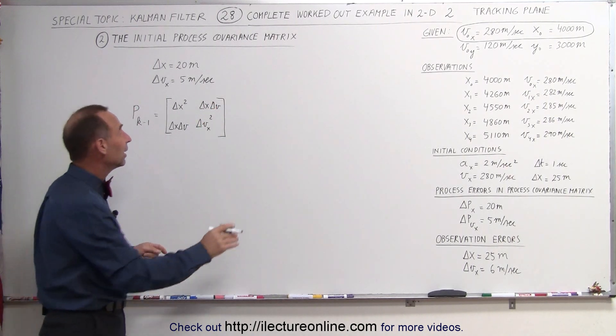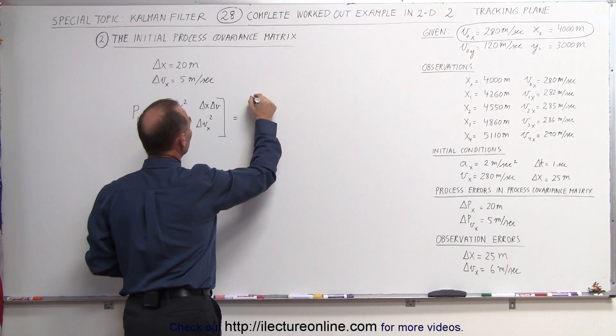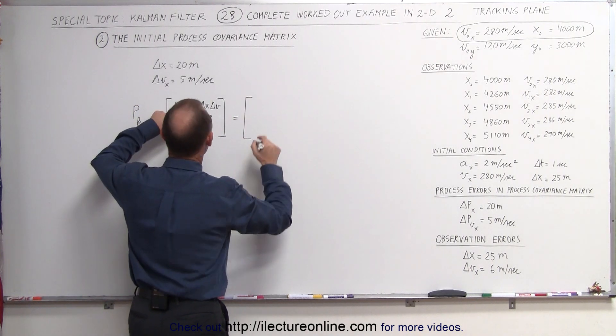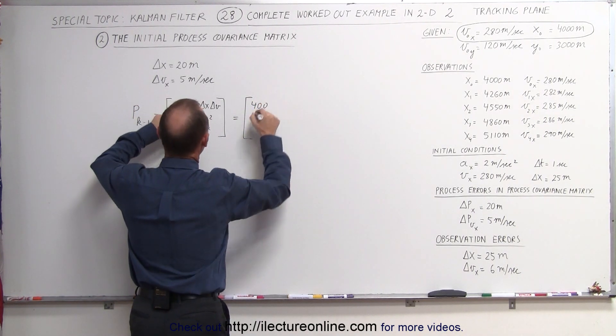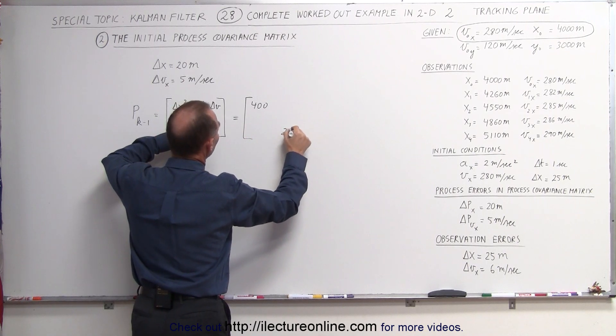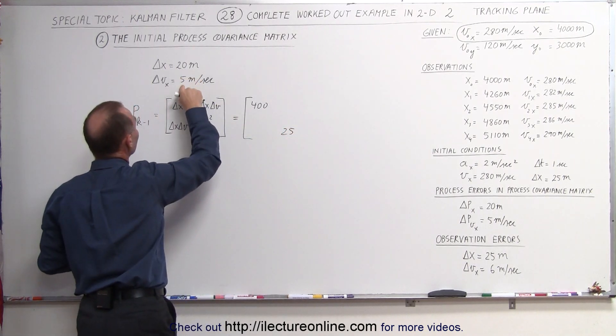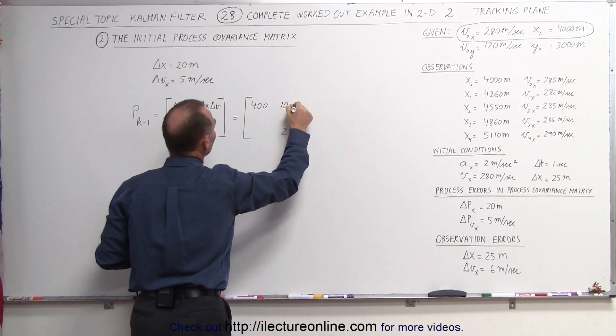Now when we plug the numbers in, it will look as follows. The position squared will be 400 and the velocity squared will be 25. We multiply 20 times 5 and get 100 as the cross terms.